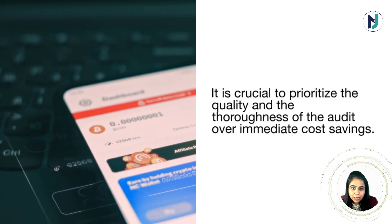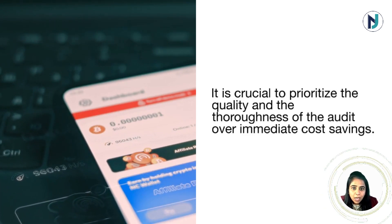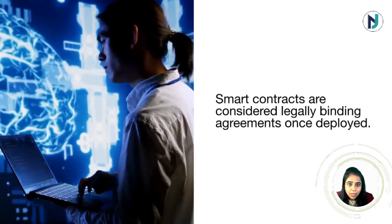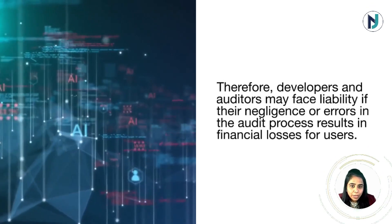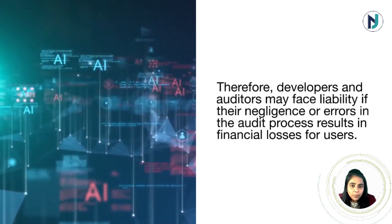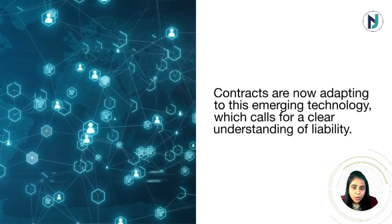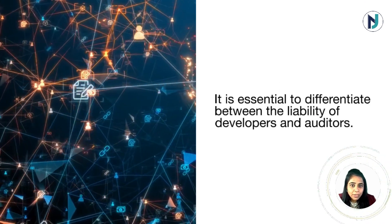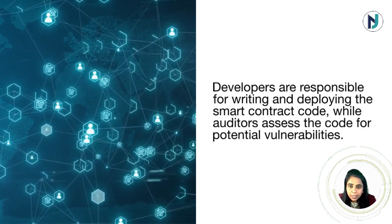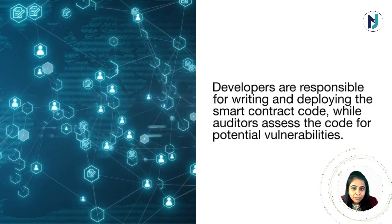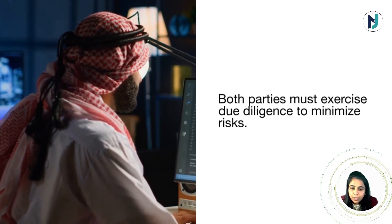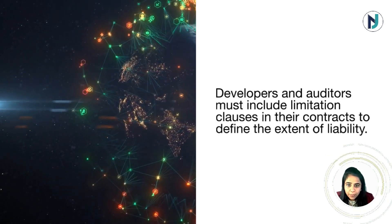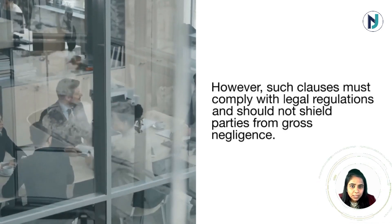Navigating liability in smart contract auditing: smart contracts are considered legally binding agreements once deployed. Developers and auditors may face liability if their negligence or errors in the audit process result in financial losses for users. It is essential to differentiate between developer liability — responsible for writing and deploying the contract code — and auditor liability, which involves assessing the code for vulnerabilities. Both parties must exercise due diligence. Developers and auditors must include limitation of liability clauses in their contracts, though such clauses must comply with legal regulations and should not shield parties from gross negligence.